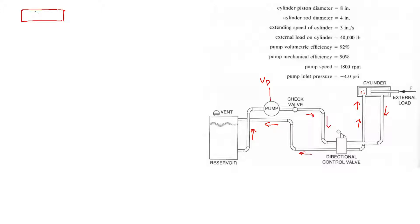The first question asks us to find the volumetric displacement (VD) of the pump. To find VD, we first need the theoretical flow, and to find that we can start with the actual flow. We have the velocity of extension and the area of the piston. Thinking of the piston extending at 3 inches per second through the fluid, velocity times area gives us the flow rate. So Q_actual equals area times velocity.